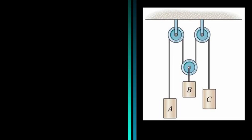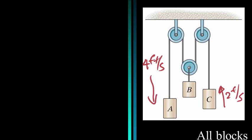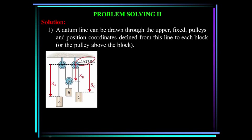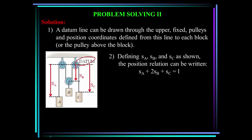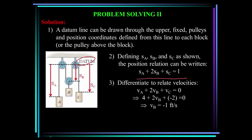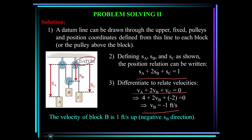Here's another problem. Block A is moving downward with a speed of 4 feet per second, and block C is moving up at 2 feet per second. Find the speed of block B. All blocks are connected to a single cable, so only one position-length equation is required. Draw a datum line through the upper fixed pulleys and define position coordinates SA, SB, and SC from this line to each block. The position relationship is SA plus 2SB plus SC equals L. Differentiating to relate velocities, substituting VA equals 4 feet per second and VC equals minus 2 feet per second, the velocity of B is minus 1 foot per second. The velocity of B is upwards.